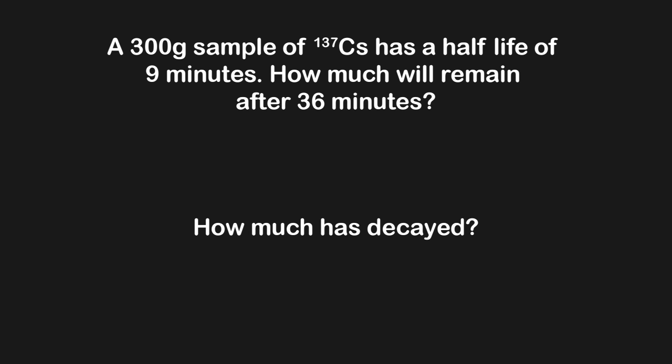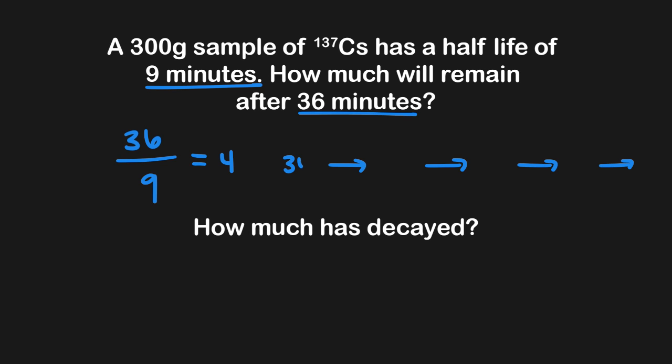Now that we've seen the difference between remaining versus decayed, let's apply this to a problem that asks about both. A 300 gram sample of cesium-137 has a half-life of nine minutes. How much will remain after 36 minutes? We take our total time of 36 minutes and divide by the single half-life of nine minutes. 36 divided by nine equals four, so we need to draw four arrows. We start with a 300 gram sample and begin halving at the end of each arrow.